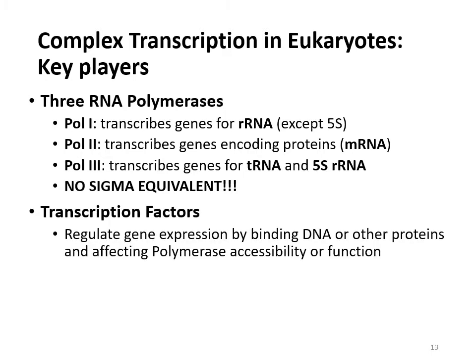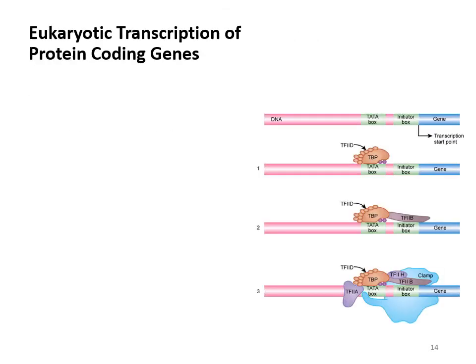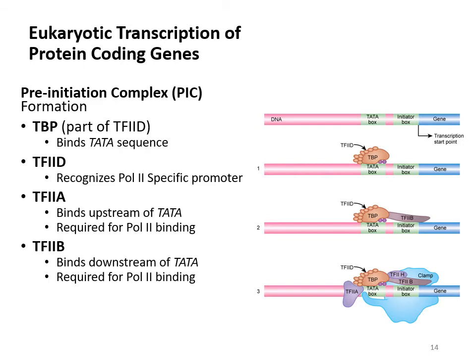Instead of sigma, eukaryotes need a series of transcription factors — whenever you see transcription factors, these are in eukaryotes to help polymerase recognize and bind or initiate transcription. Transcription factors serve the purpose that sigma would have had, to recognize and bind the DNA to start transcription. This big pre-initiation complex needs to form in eukaryotes — it does not in prokaryotes because prokaryotes have the sigma subunit. Eukaryotes need all of these players to help recognize and bind to the promoter.